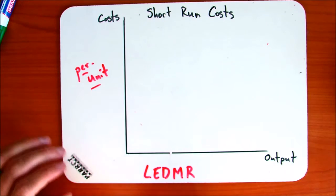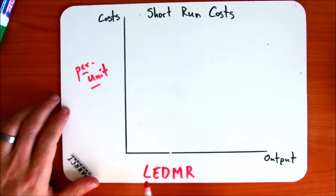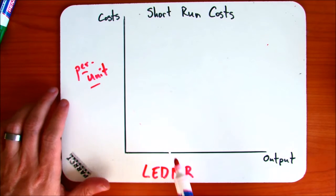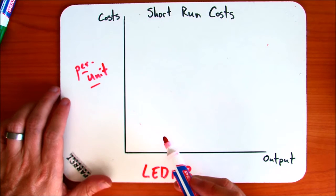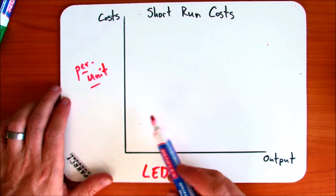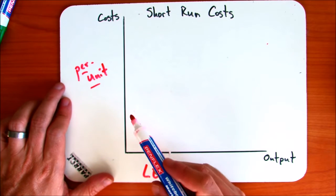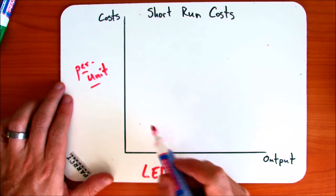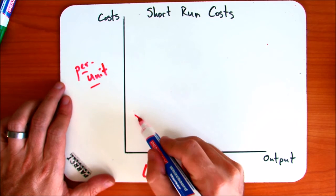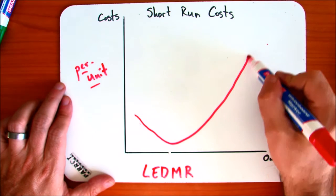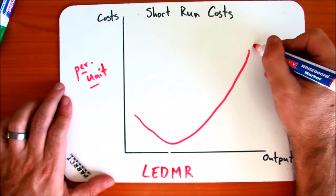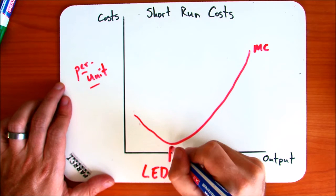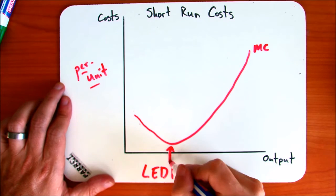First let's look at marginal costs. Remember, the law of eventually diminishing marginal returns says that in the short run, costs will first fall because of improvements to specialization. But eventually, after hitting the point of diminishing marginal returns, they rise. So we simply draw this kind of like a Nike swoosh — down and then up — and that's what MC looks like. We can see the point of diminishing marginal returns there at the lowest point.